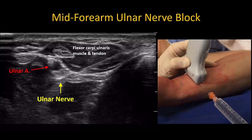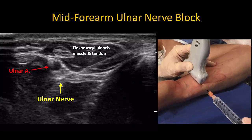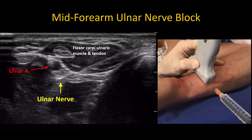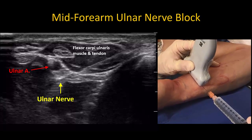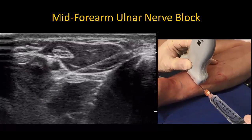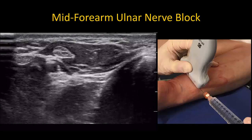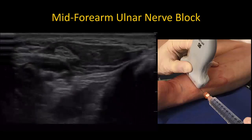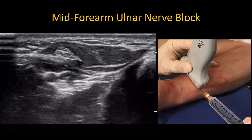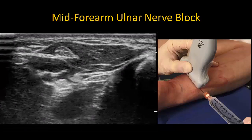In this video, the ulnar nerve is targeted at a more distal location where it is lying adjacent to the artery. More experienced practitioners can use a single-operator technique with a 25-gauge hypodermic needle. Once the needle tip is within the fascial envelope surrounding the nerve, further needle tip manipulation is generally unnecessary.